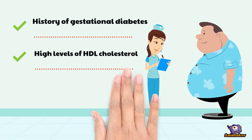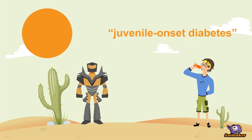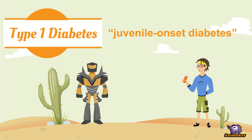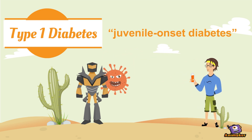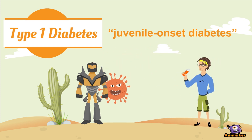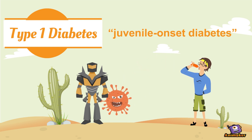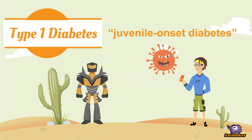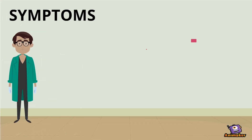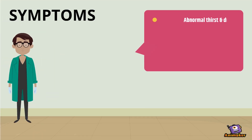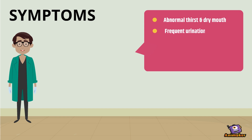Type 1, also known as juvenile onset diabetes, is caused by an autoimmune reaction where the body's defense system attacks the cells that produce insulin. The body does not produce insulin. Symptoms include abnormal thirst and dry mouth, and frequent urination.